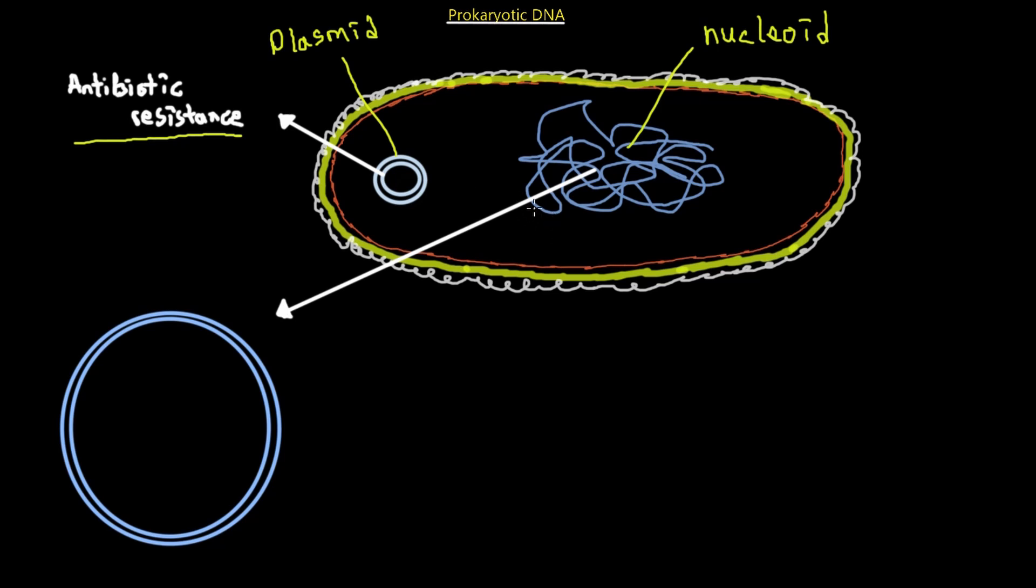Otherwise, some bacteria will be able to survive and they will develop genes or they have genes that are antibiotic resistant that they will then pass on to their offspring. And their offspring are also going to have these antibiotic resistance genes. And then that initial antibiotic that we use is not going to work. And this is causing a huge problem in the pharmaceutical business today.